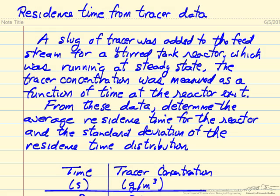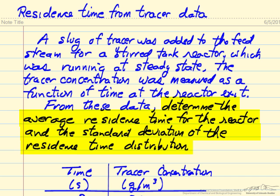In this problem we're going to look at determining residence time distribution from making tracer measurements. The idea is that we inject something that we can detect its concentration in the outlet — it could be a dye or a radioactive tracer. We inject the slug into a feed stream for a continuous steady-state reactor, in this case a stirred tank, and we measure the concentration at the outlet as a function of time. From these measurements we want to determine the residence time and the residence time distribution.